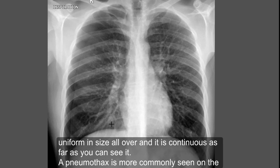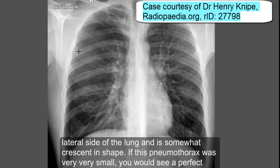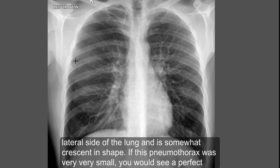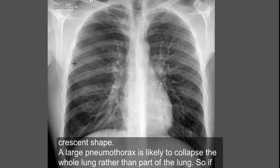A pneumothorax is more commonly seen on the lateral side of the lung and is somewhat crescent in shape. If the pneumothorax was very small you would see a perfect crescent shape. A large pneumothorax is likely to collapse the whole lung rather than part of the lung.